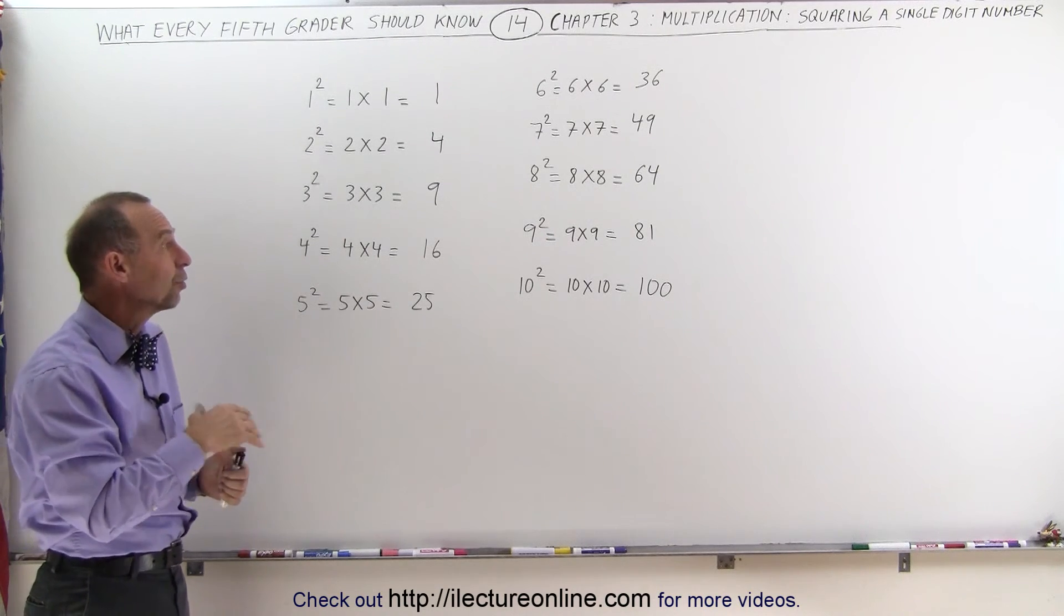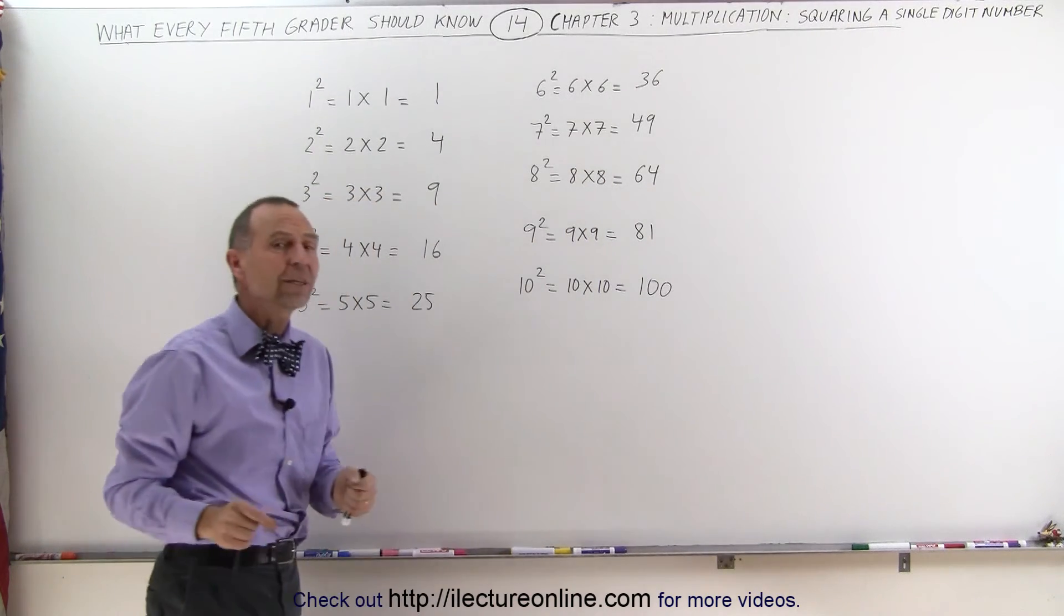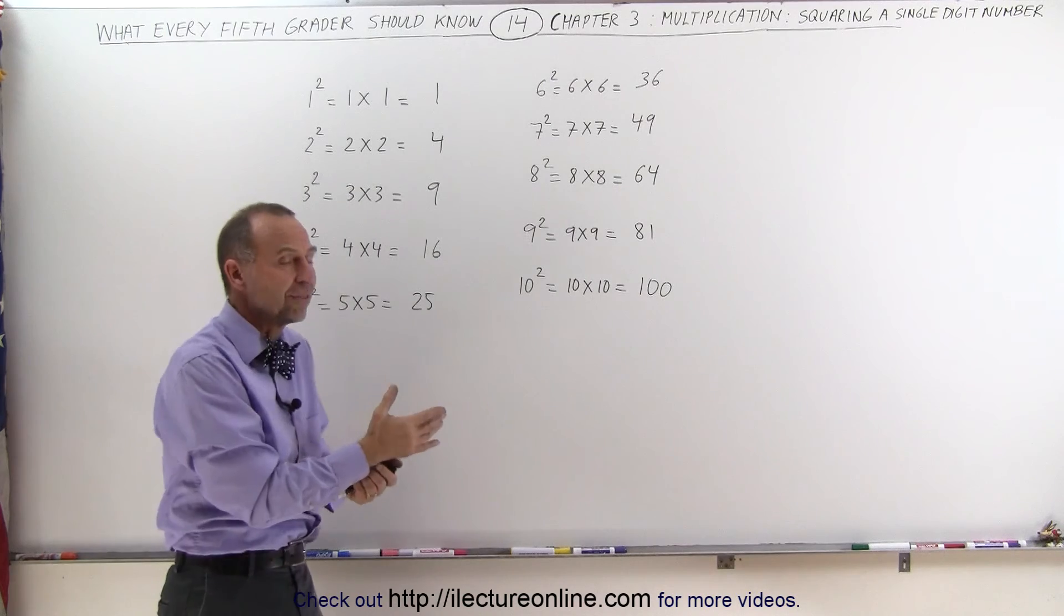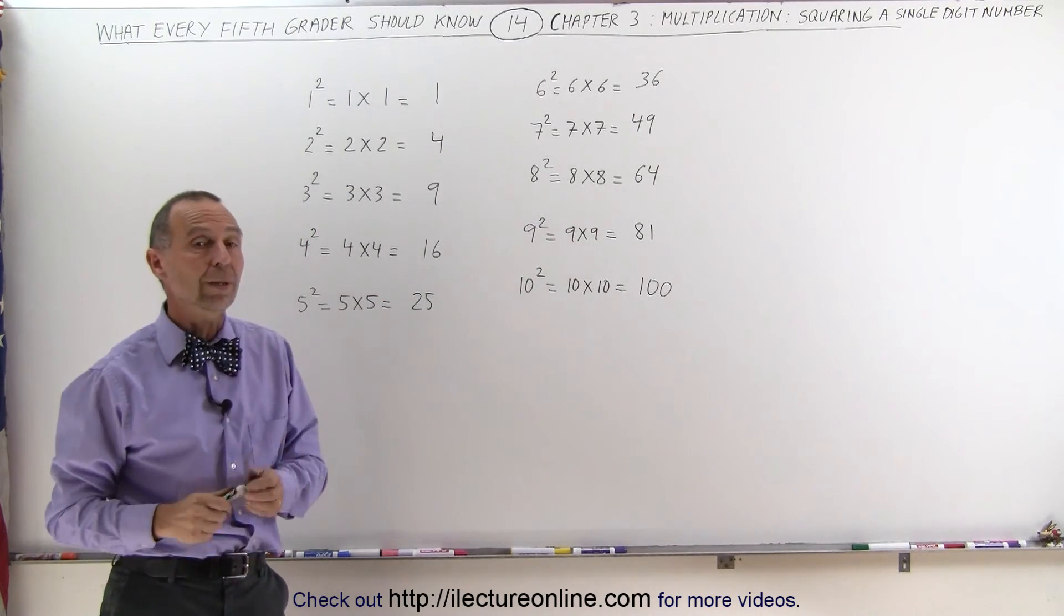And then we can see them, so when we end up with something like 8 times 8, you right away say, I know what that is, that's 64. 7 times 7, I know what that is, that's 49. So it would be a good idea to memorize this as well.